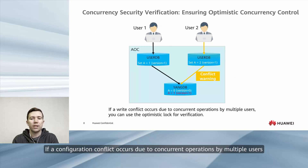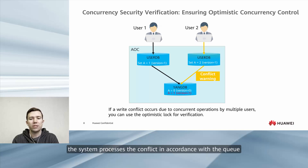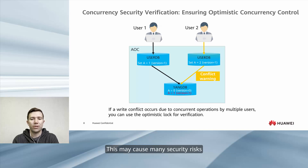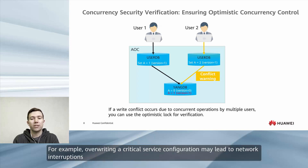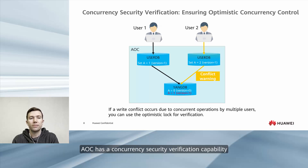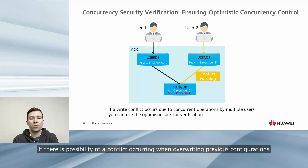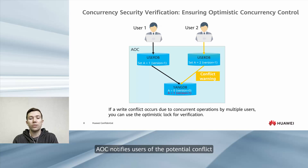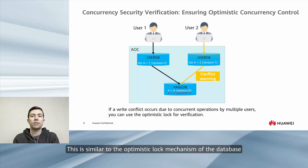If a configuration conflict occurs due to concurrent operations by multiple users, the system processes the conflict in accordance with the queue. This may cause security risks — for example, overwriting a critical service configuration may lead to network interruptions. AOC has a concurrency security verification capability. If there is a possibility of a conflict occurring when overwriting previous configurations, AOC notifies users of the potential conflict. This is similar to the optimistic lock mechanism of a database.